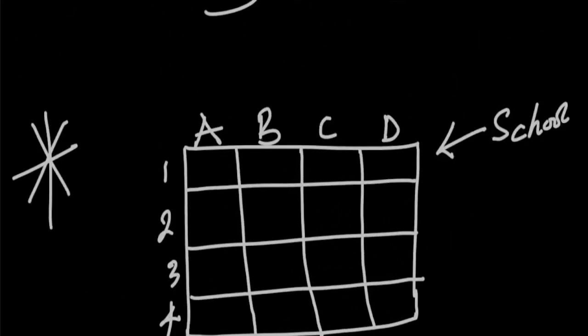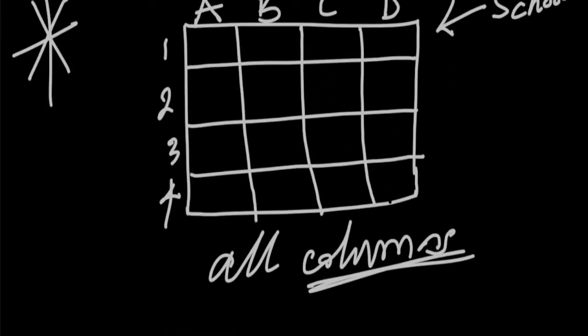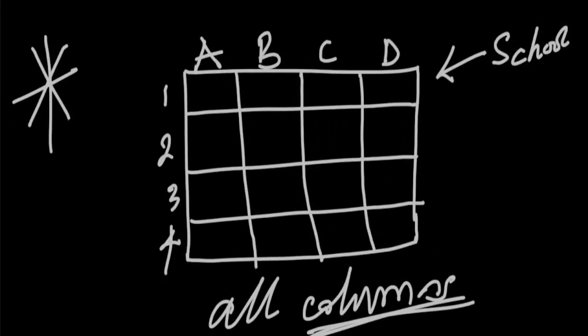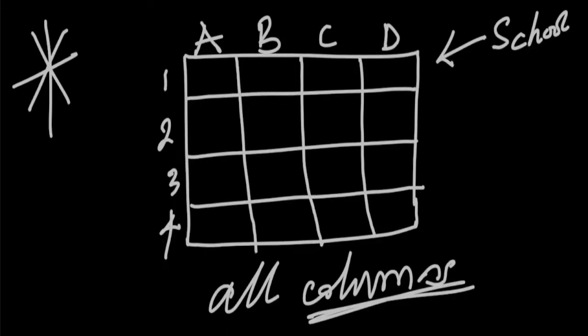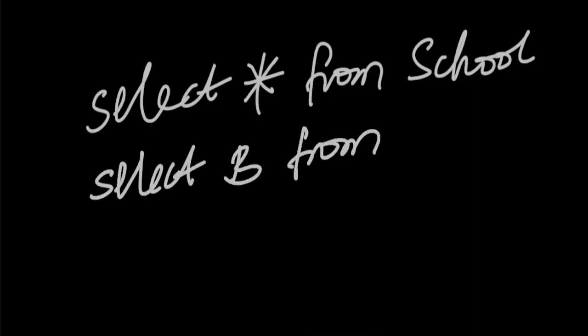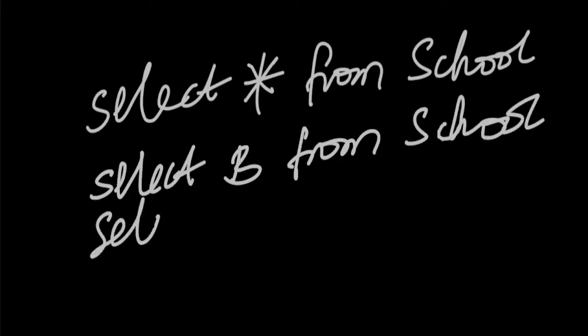If you want to select only column B, or you want to select only column C, you can do that by simply saying SELECT B FROM school. If you need column C, the same thing, SELECT C FROM school.